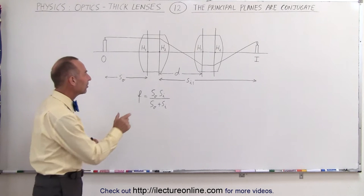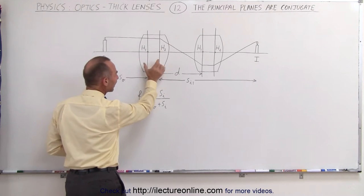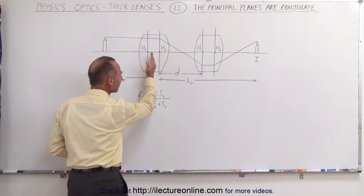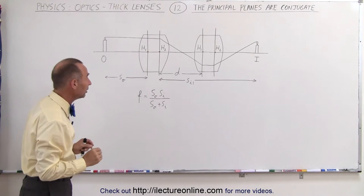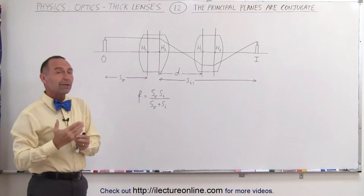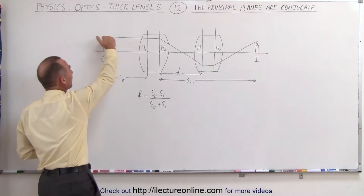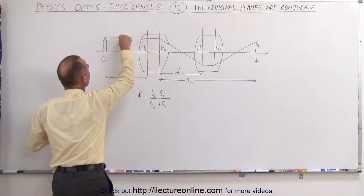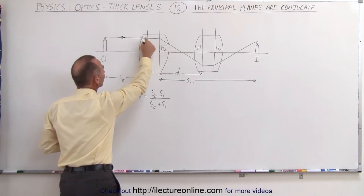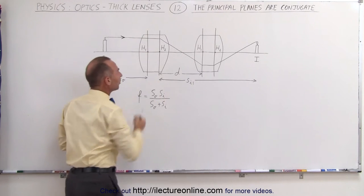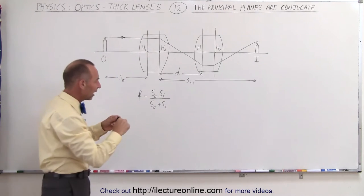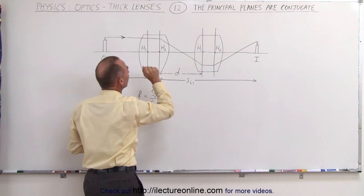What we mean by that is that the principal planes in a thick lens act as if they're on the same plane even though they're physically some distance apart. And really what that means is that if we have a ray coming in from some object, it is incident on the first principal plane and then it emerges the lens as if it was coming from the second principal plane.